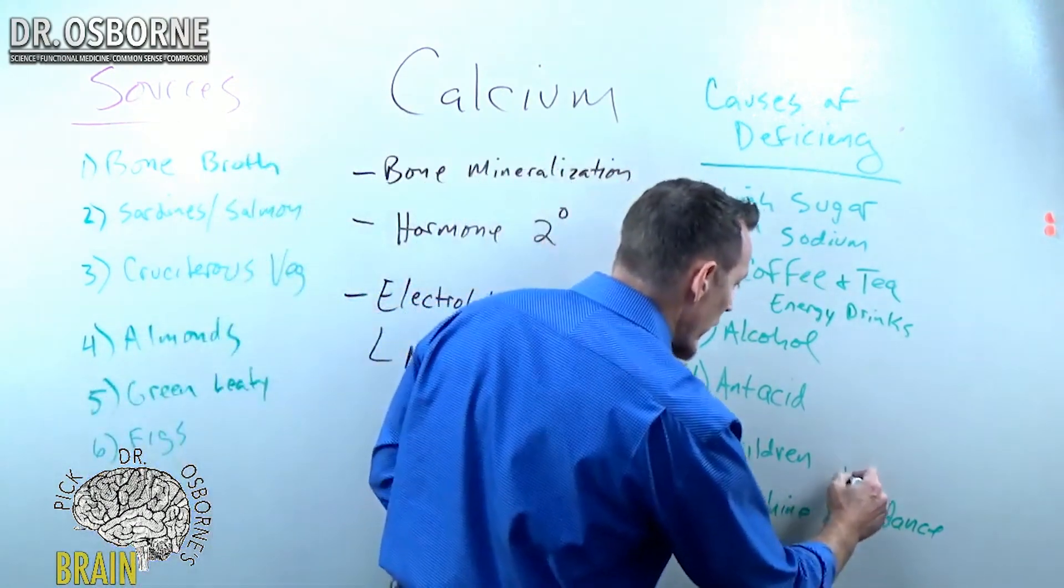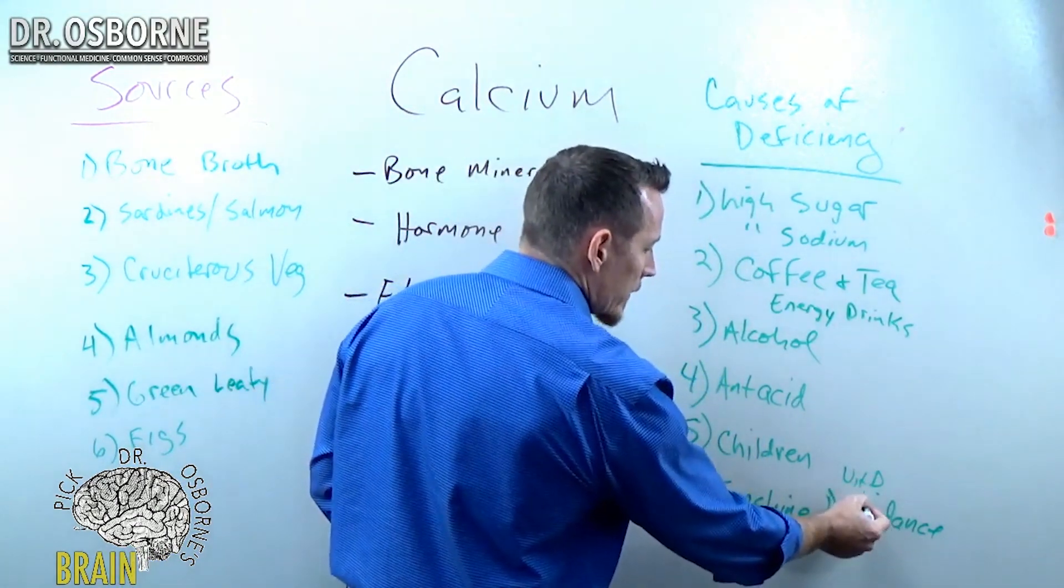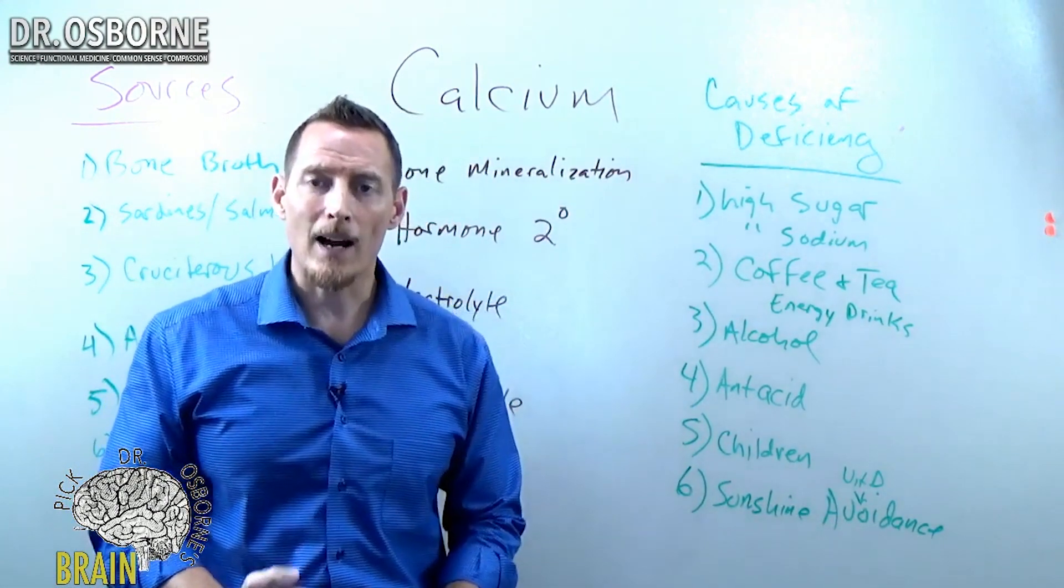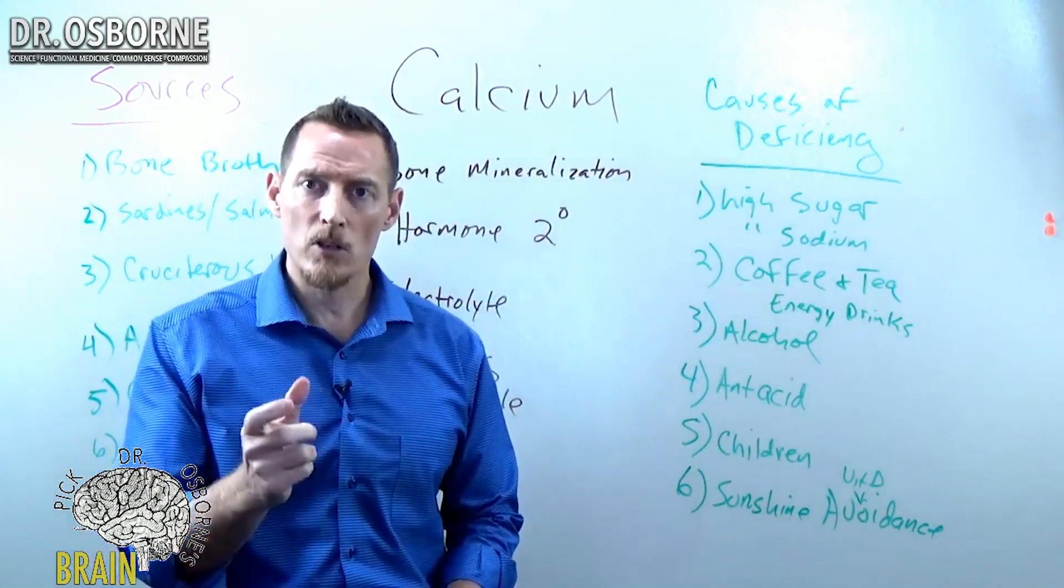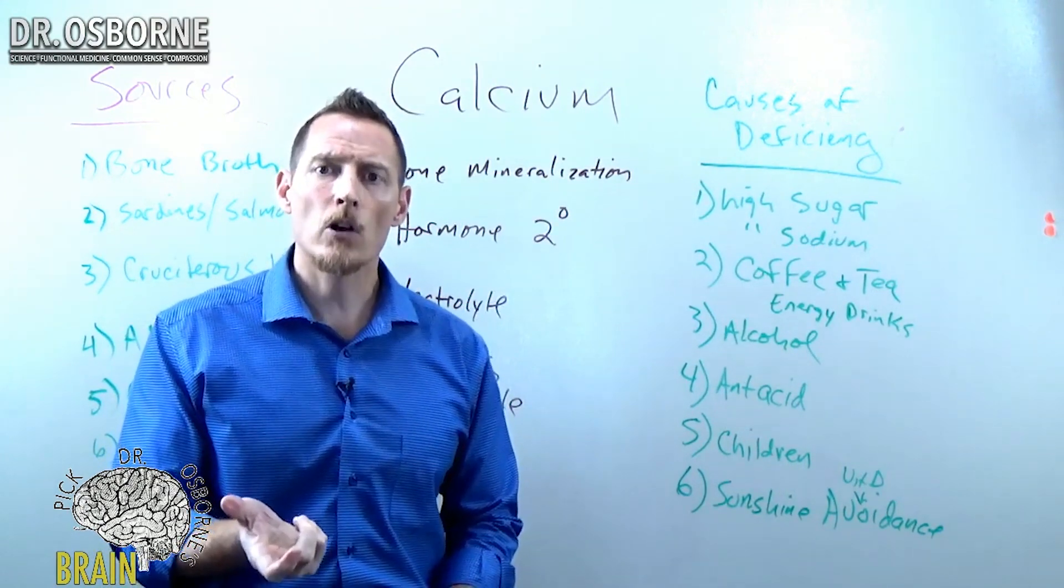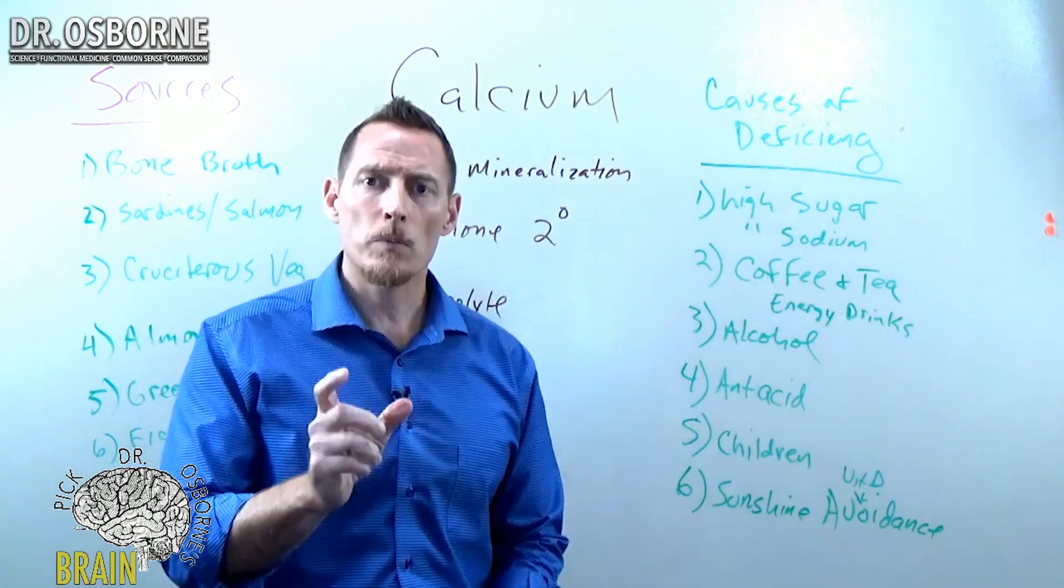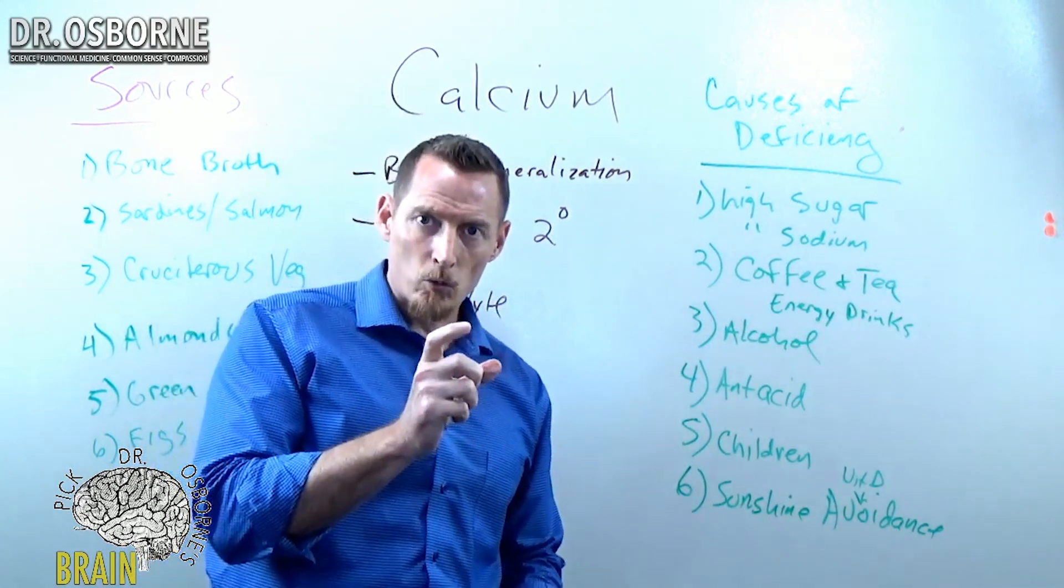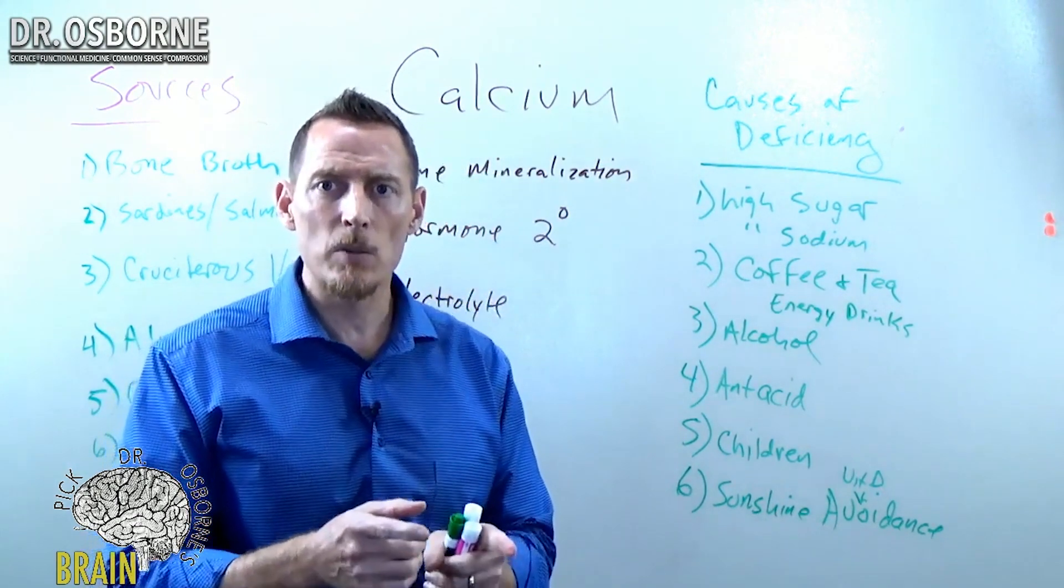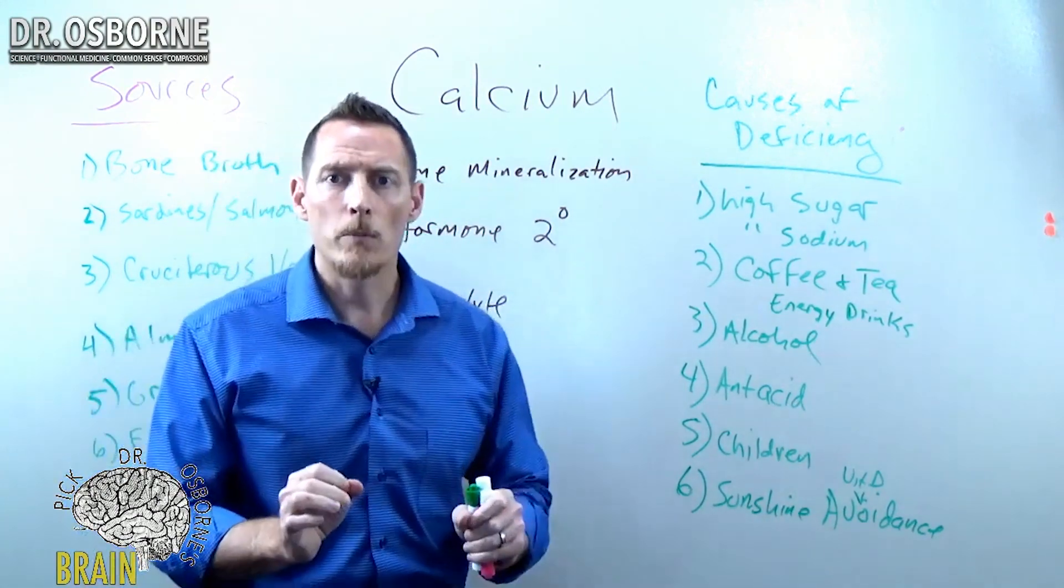Now, why is that important? Because vitamin D talks to your intestines and it tells your intestinal cells to absorb calcium from the diet. That's actually where calcium is absorbed, in your small intestine. About 65% of your absorption occurs in your distal small intestine, your ileum, which is the area of the small intestine that occurs right before the large intestine. And that pH in that area needs to be somewhere around 6.5 to 7.5 for ideal calcium absorption.